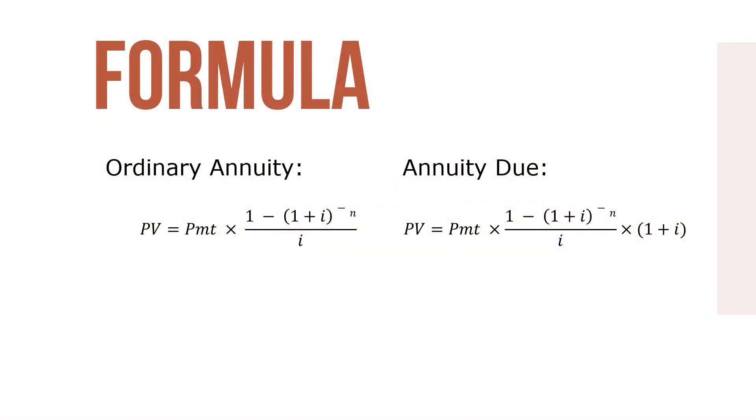In these formulas, PV equals present value, PMT equals annuity payment, I equals interest rate per period, the nominal rate plus periods per year, and N equals the number of periods, the years times the period per year.